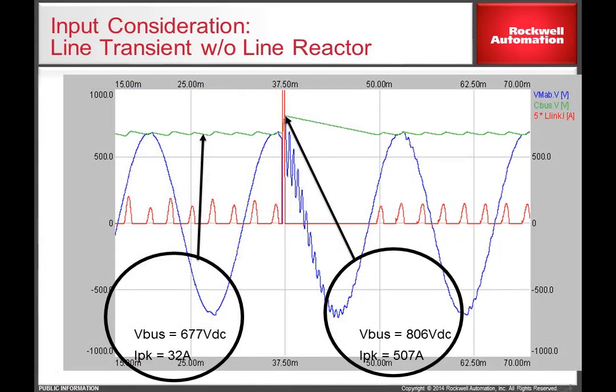One of the advantages of installing a line reactor is to protect the drive from a voltage transient. This slide shows what happens when a 10kVAR power factor correction cap bank is switched in on a 500kVA transformer rated 5.75%, 480 volts and 60 hertz.